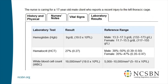Lab results: hemoglobin 9, hematocrit 27%, white blood cell count 19,000. You may see reference ranges on your screen — that's somewhat new. Today, candidates are expected to have memorized reference ranges for lab values, but with Next Generation NCLEX we're trying to be more authentic. In real life, 99.9% of the time a lab result comes with the reference range printed right next to it, so we are going to provide it in the name of authenticity.